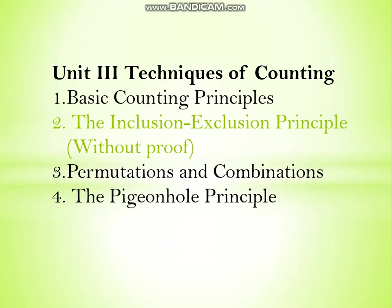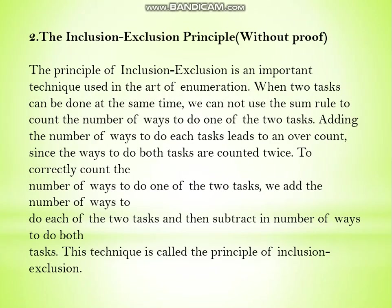The principle states that when two tasks can be done at the same time, we cannot use the sum rule to count the number of ways to do one of the two tasks. For example, if there are two flavors of ice cream at the shop and we have n number of people, n1 out of those had vanilla ice cream and n2 out of those had mango ice cream.